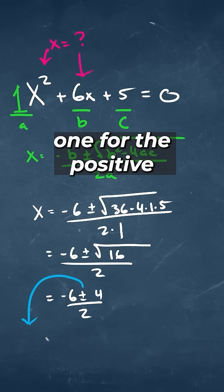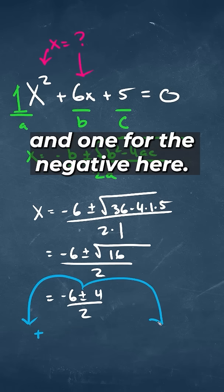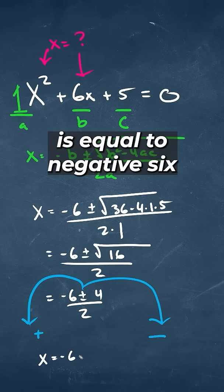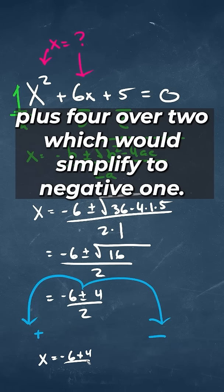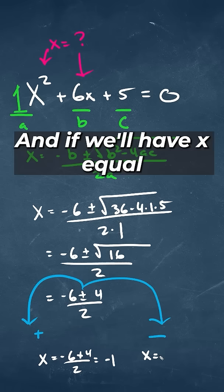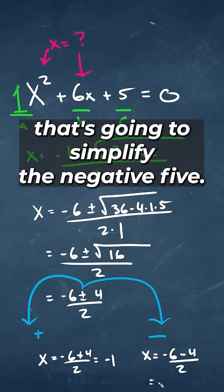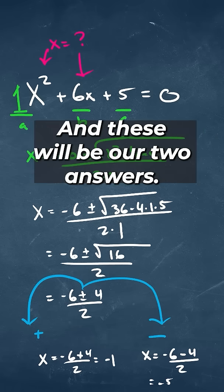When we have this, we can do one for the positive and one for the negative. So we're going to get that x is equal to negative 6 plus 4 over 2, which would simplify to negative 1. And we'll have x equal to negative 6 minus 4 over 2, that's going to simplify, and these will be our two answers.